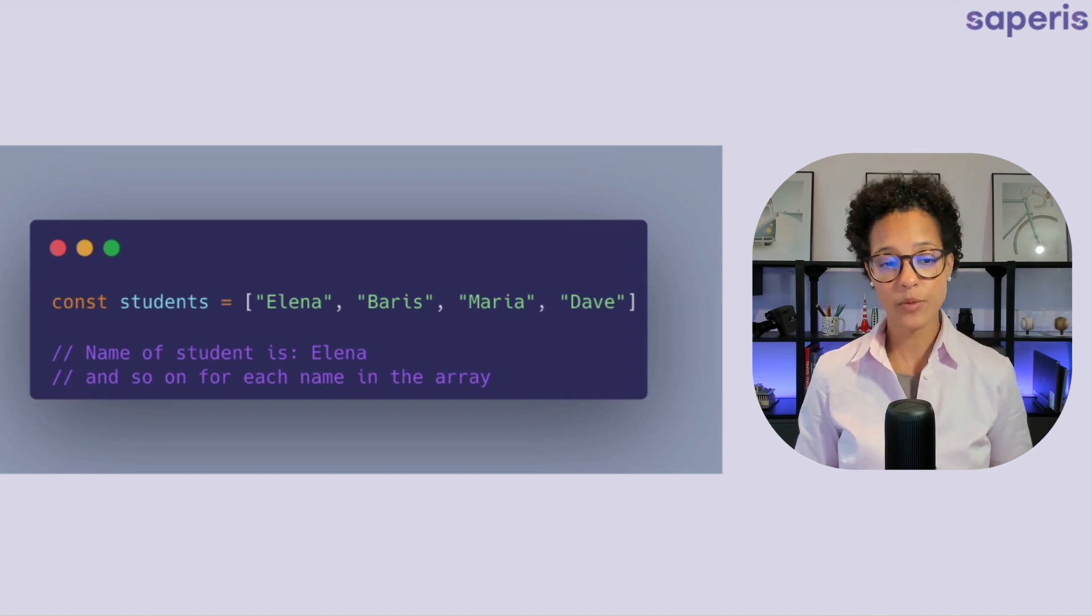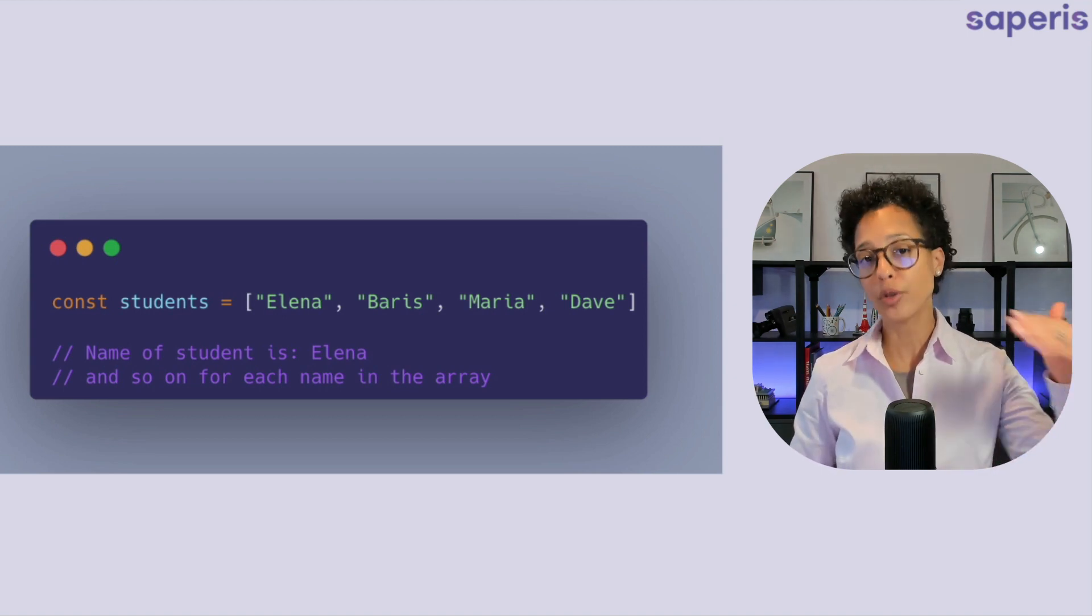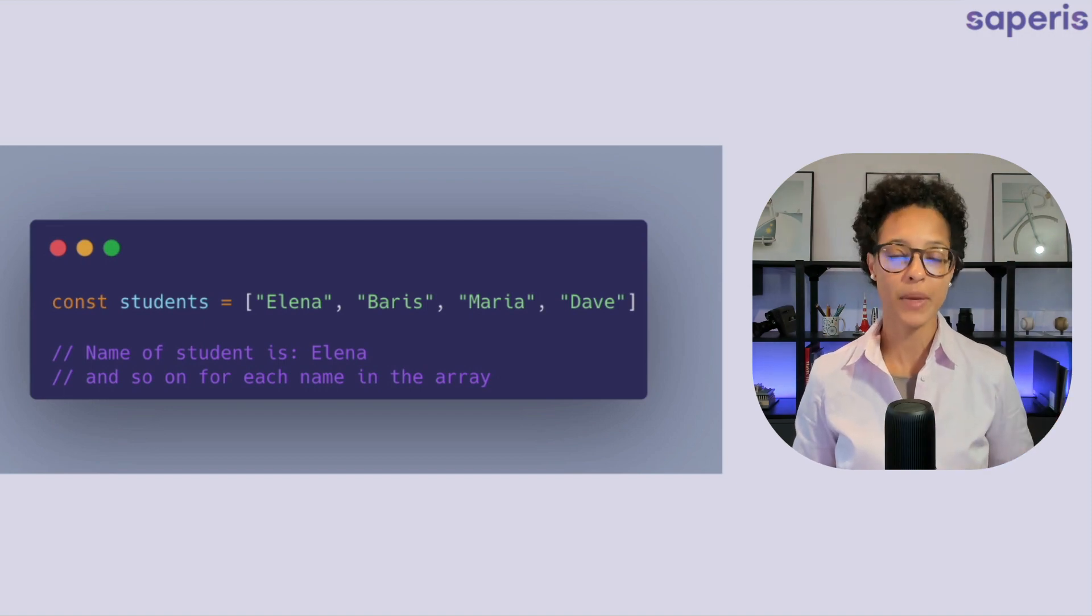Like in this specific case where we have an array of students and we would like to log out the sentence name of student is and then the respective name of the student. So we need a way to iterate over every single name in that array.